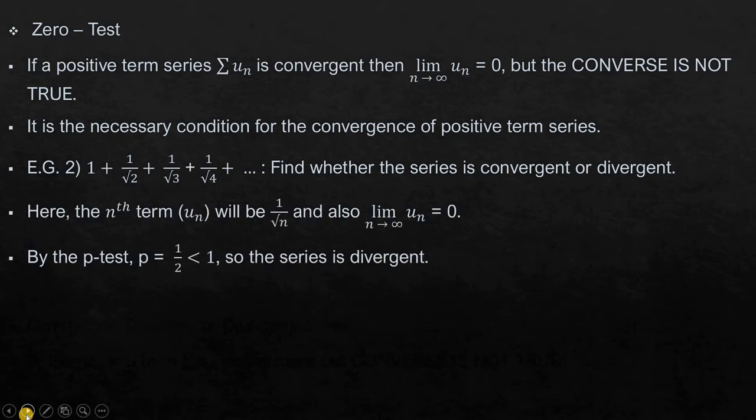As we can see here, the nth term u_n will be 1 over root n, and if we find limit n tending to infinity u_n, we will get zero. Also if we find its convergence by the p-test, we will get the value of p equal to 1/2 which is less than 1 and hence the series will be divergent.